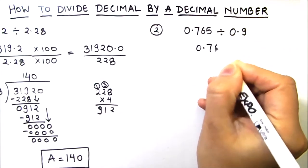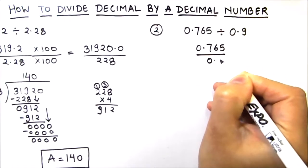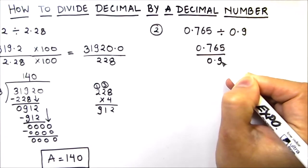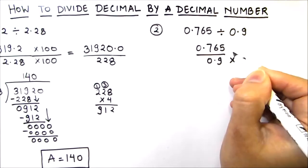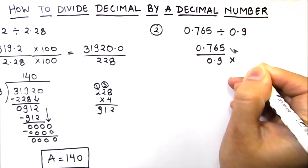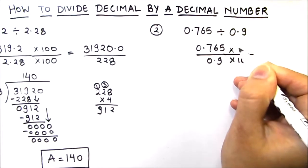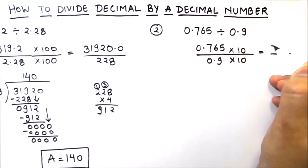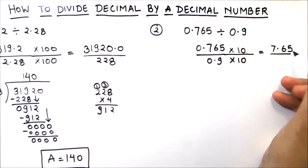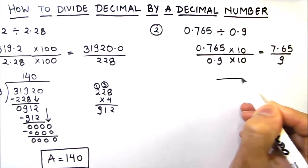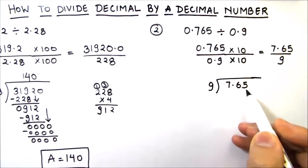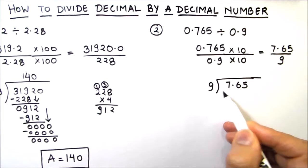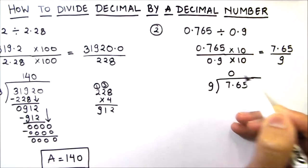Our divisor is 0.9. To make it equal to 9 and remove the decimal, we multiply it by 10. Since we are multiplying the denominator by 10, we also multiply the numerator by 10, so the numerator becomes 7.65 and the denominator is 9. Now we can divide 7.65 by 9. Since 9 doesn't go into 7, we write a 0.